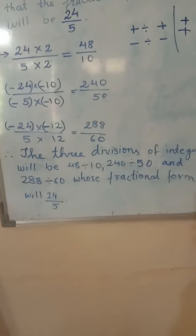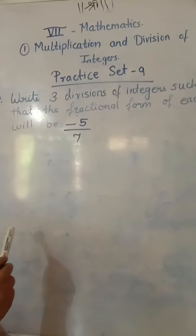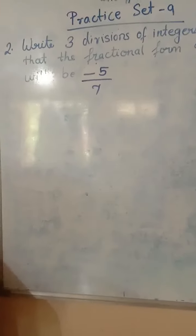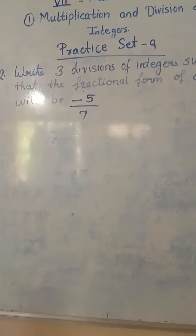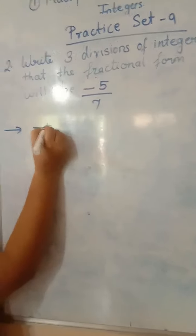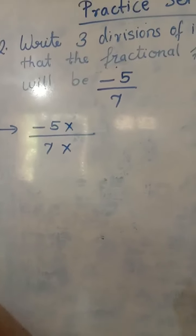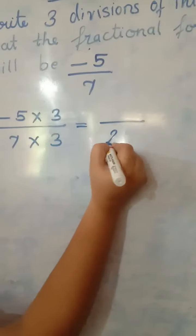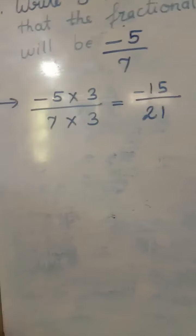In the same way we solve the next part: write 3 divisions of integers whose fractional form is negative 5 upon 7. Here we need a negative answer — negative in the numerator and positive in the denominator. So we use both denominator numbers as positive, and one numerator number as negative, to get a negative answer.